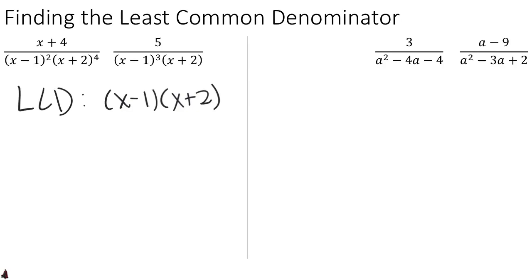Now that we have the basic building blocks, we need to determine how many of each factor we need by looking at the original fractions. The rule is to take the highest power that appears in any individual fraction for a given factor. For the (x minus 1)'s, we have (x minus 1) cubed in one fraction and (x minus 1) squared in another, so we take the highest power: 3. For (x plus 2), we have one in one fraction and four in another, so we need four. That is our common denominator.